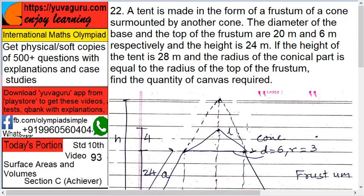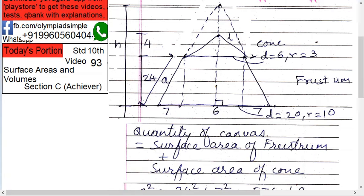Find the quantity of canvas required. Canvas means the total surface area. When you find surface area, there are two surfaces - inside and outside. You don't have to find both because we want the canvas, so you find only once. Once you understand this, the problem is easy.